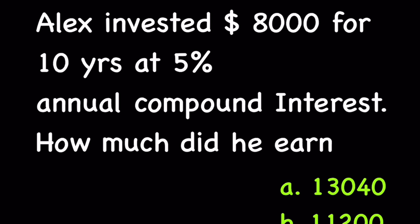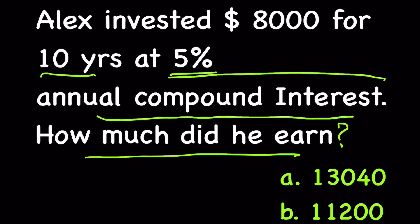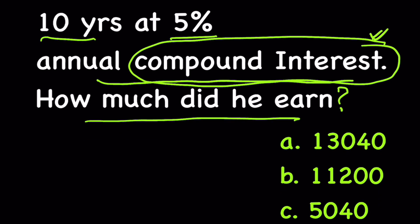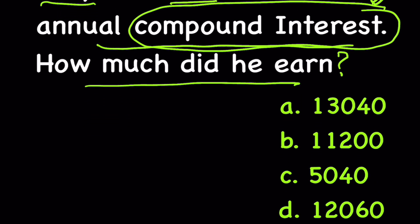Alex invested $8,000 for 10 years at 5% annual compound interest. How much did he earn at the end of 10 years? So here we have the concept of compound interest. Let us first see the options: 13,040; 11,200; 5,040; 12,060.